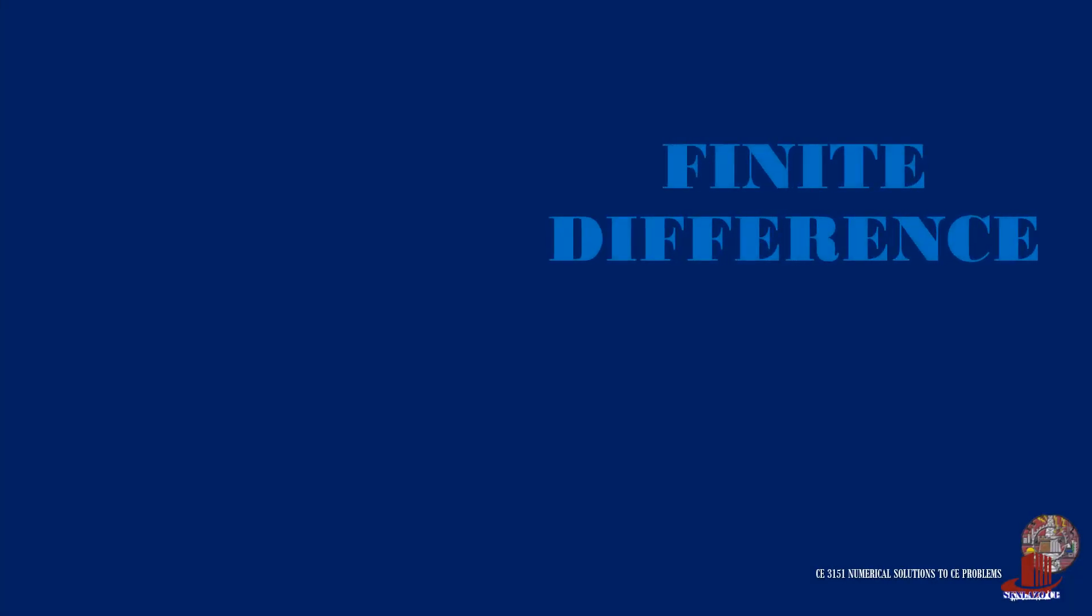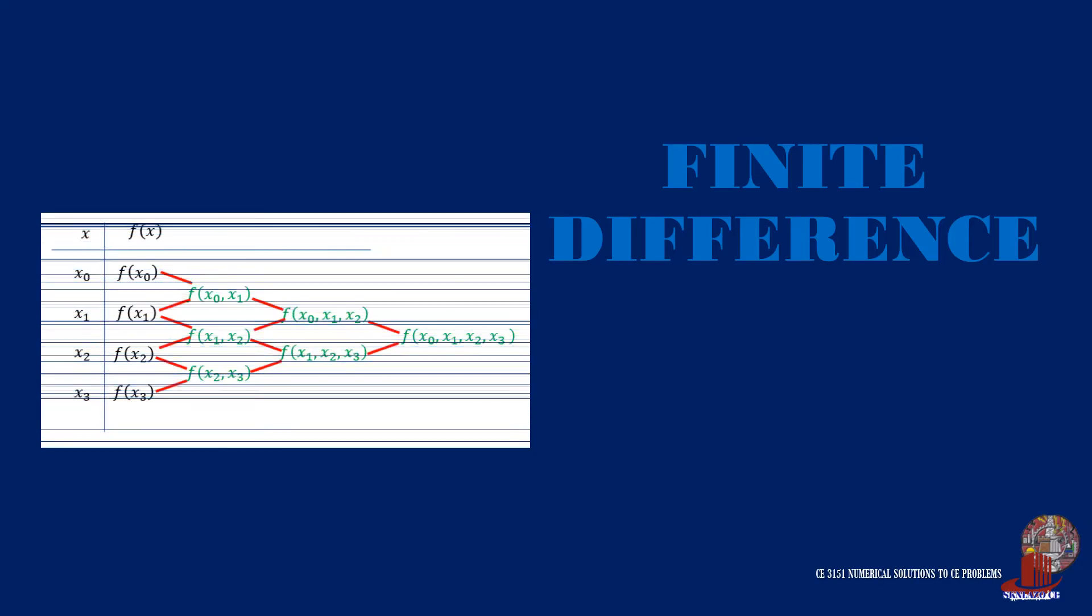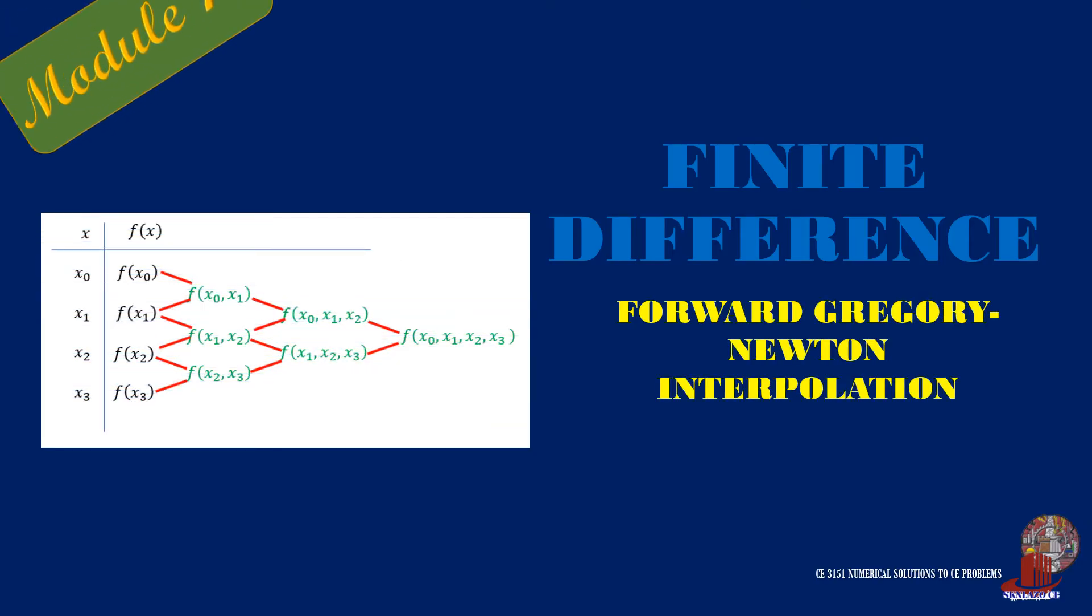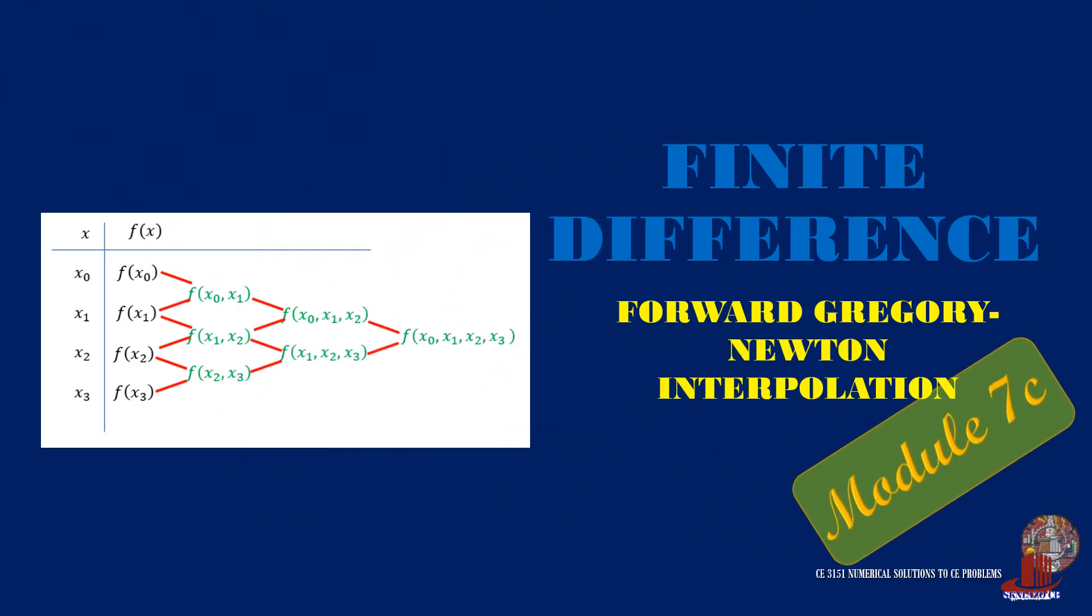Given a set of data, it would be impossible to use linear interpolation to determine the f(x) of a specific input. An approximation method known as forward Gregory interpolation can figure out the required. Learn about it here in Numerical Solutions to CE Problems.